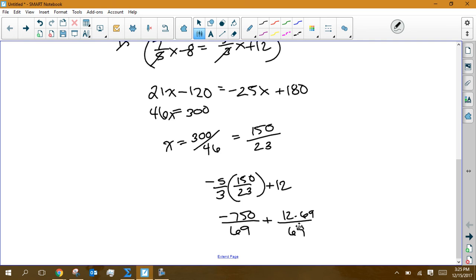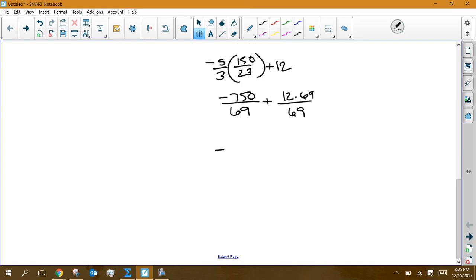That's still 12. So 12 times 69 gives me 828. So I really have negative 750 over 69 plus 828 over 69. So that means then I can reduce, or not reduce, but add those together.